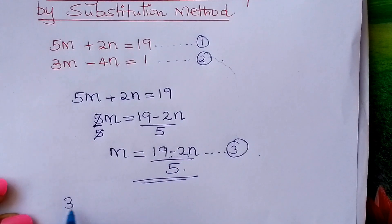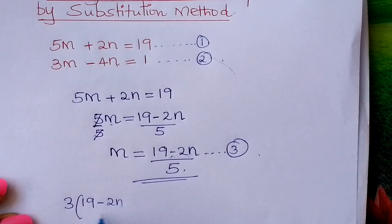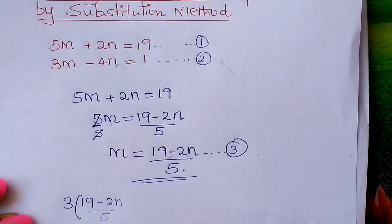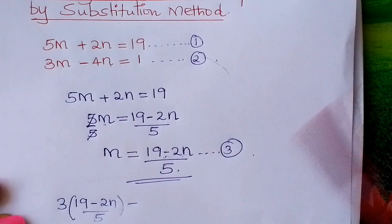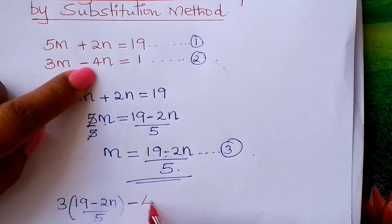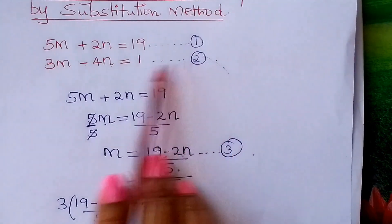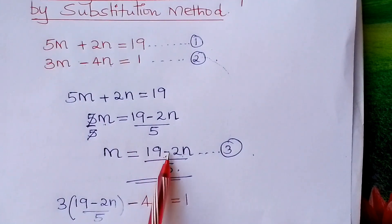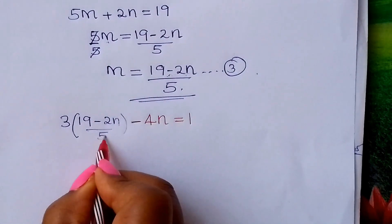So we write: 5 in brackets, 19 minus 2n over 5, then continue — minus 4n equals 1. Look at that. Where you have m in the second equation, fix 19 minus 2n over 5, and substitute it correctly.